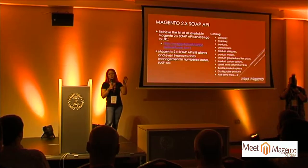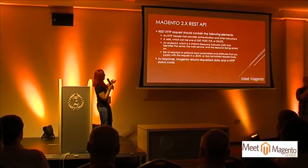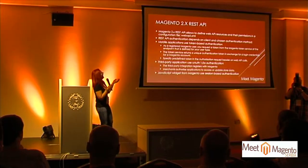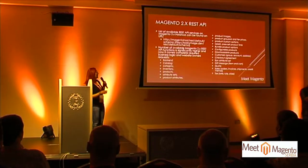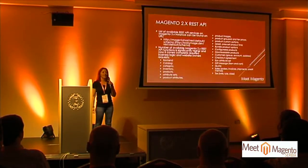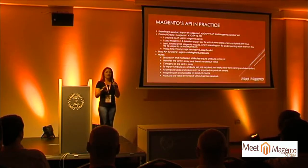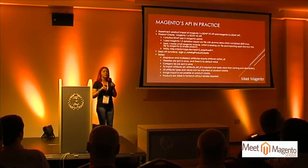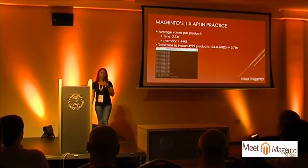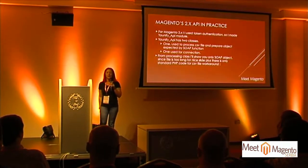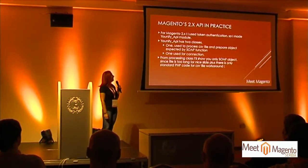For example, customer relationship management or content management systems — or stuff like that. So you can make those kinds of integrations just to improve current business logic and make it better. For Magento 1.x, we had SOAP and REST API.